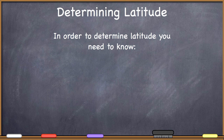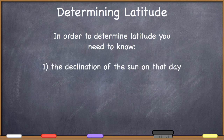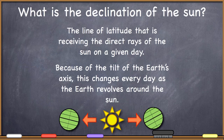You only need to know two things. First, you need to know the declination of the sun on that day. I don't think I've actually used the term declination of the sun yet, even though we have talked about this concept time and time again when we were talking about astronomical geography.